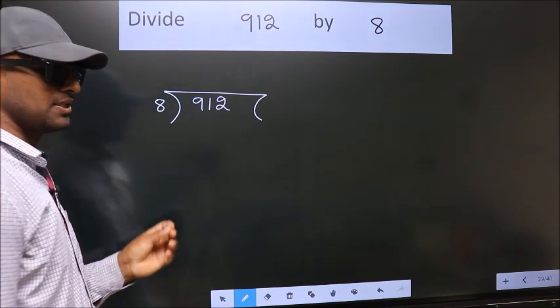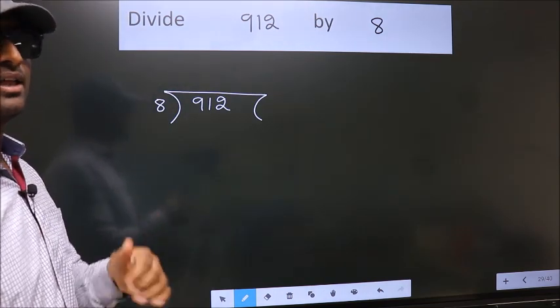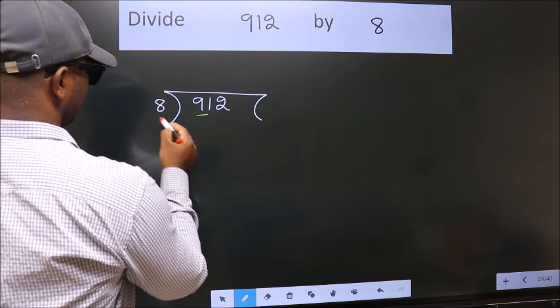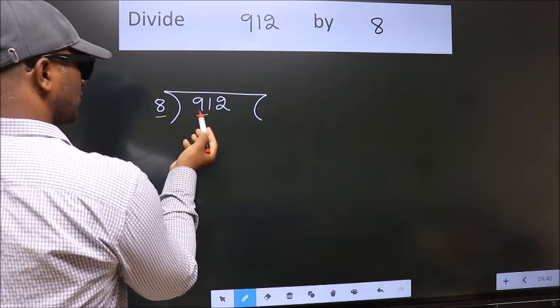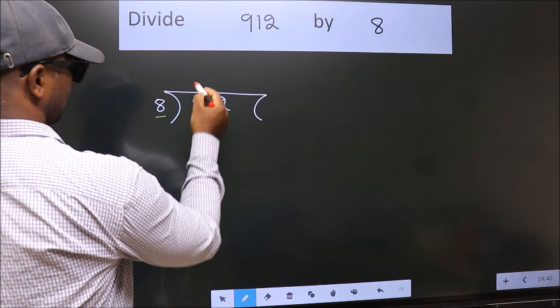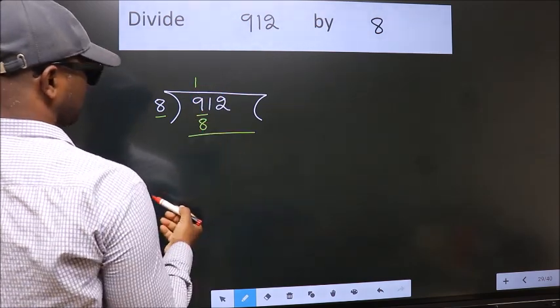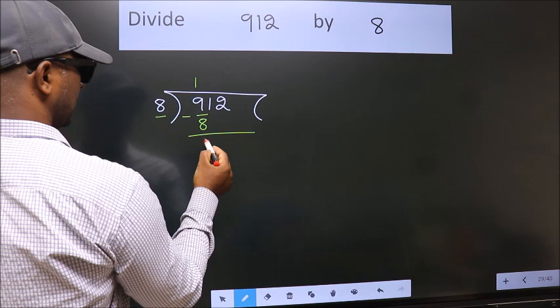This is your step 1. Next, here we have 9, here 8. A number close to 9 in 8 table is 8 once 8. Now, we should subtract. We get 1.